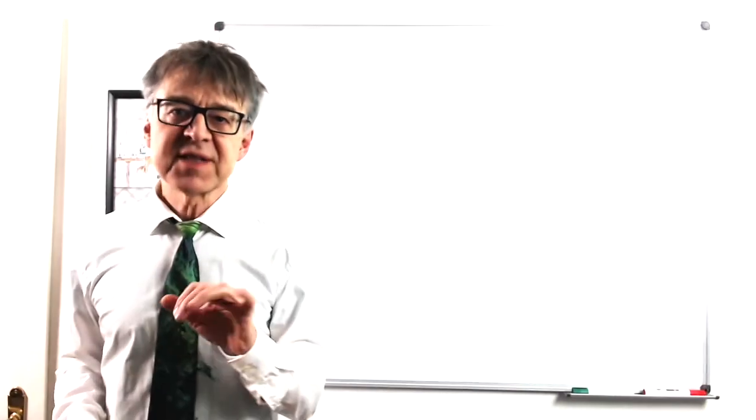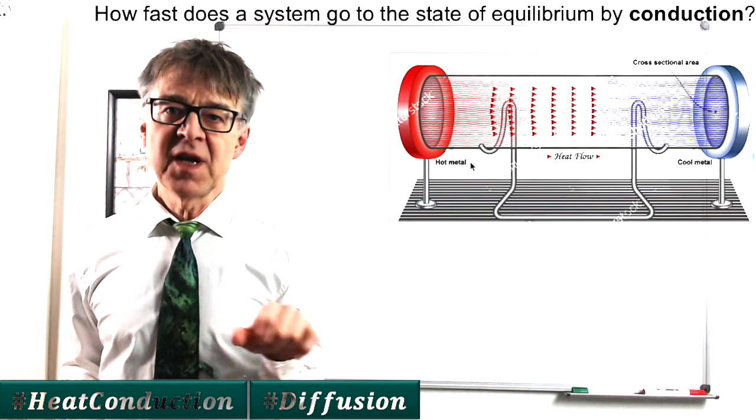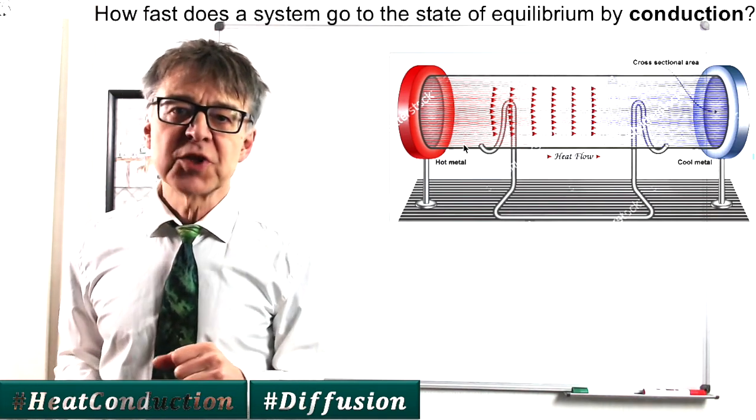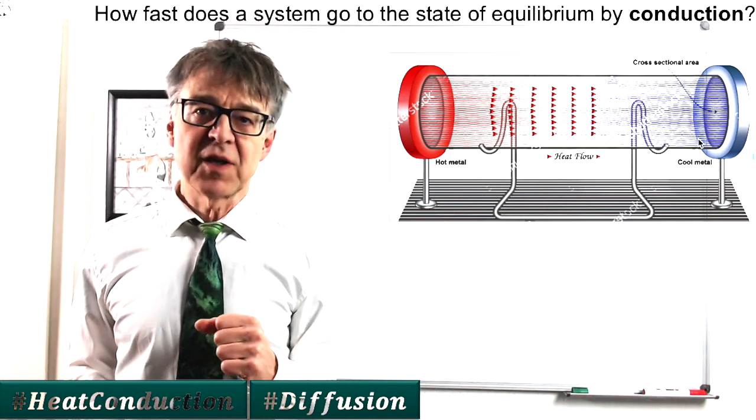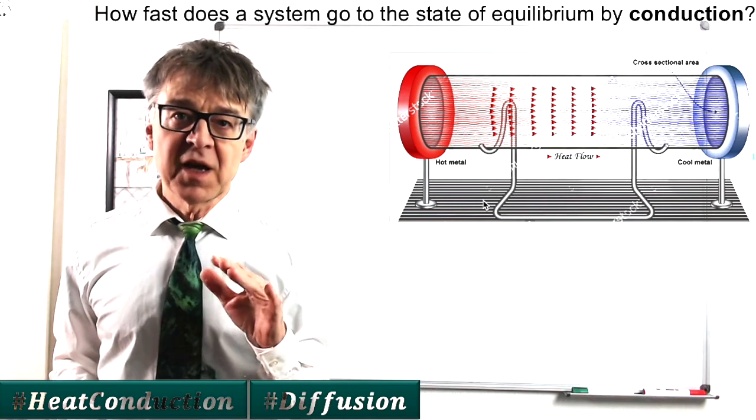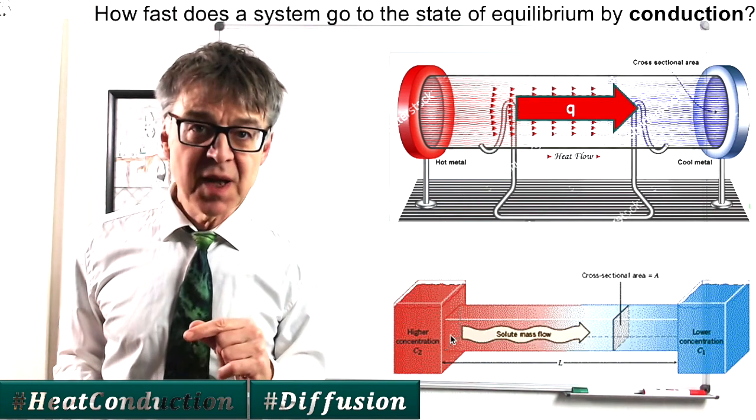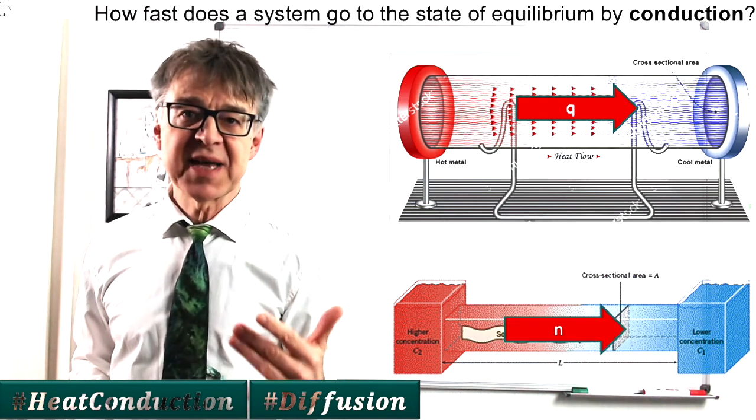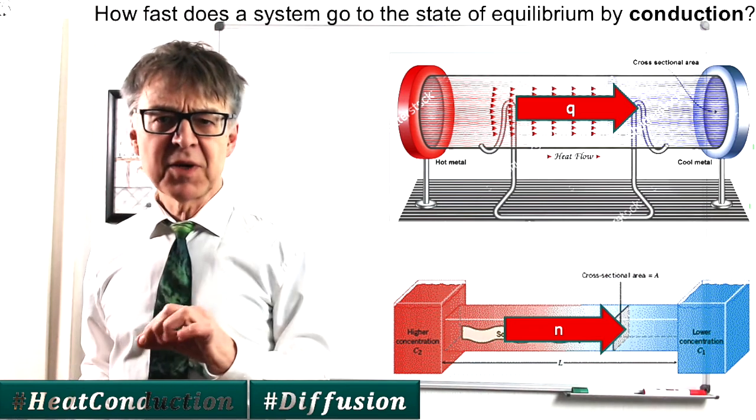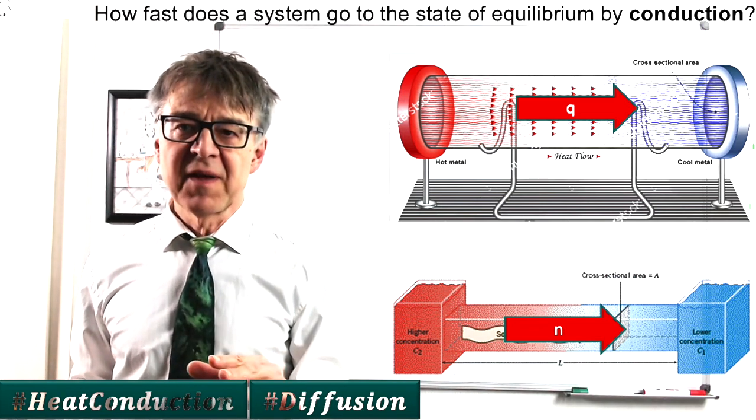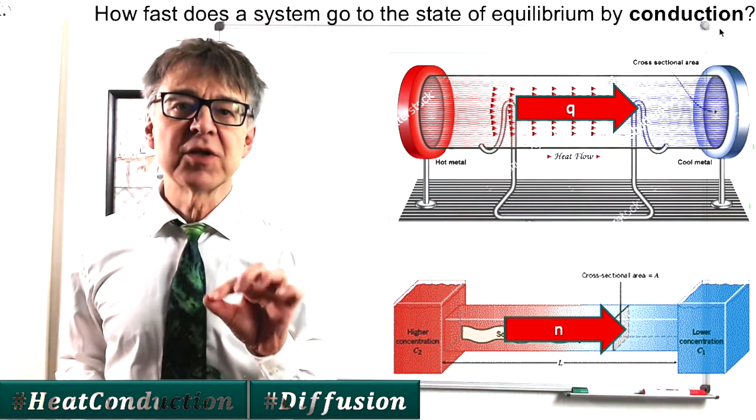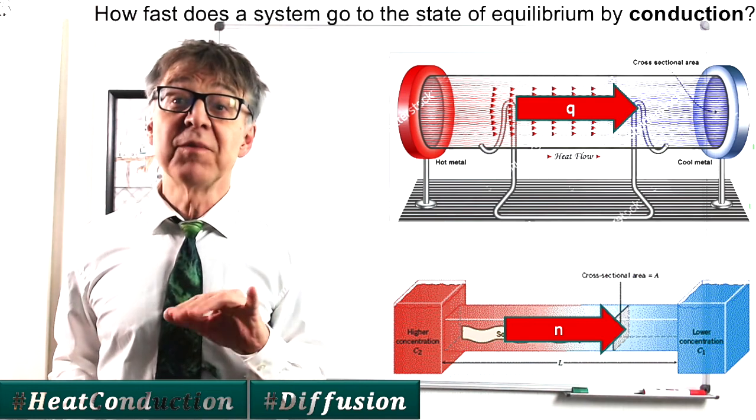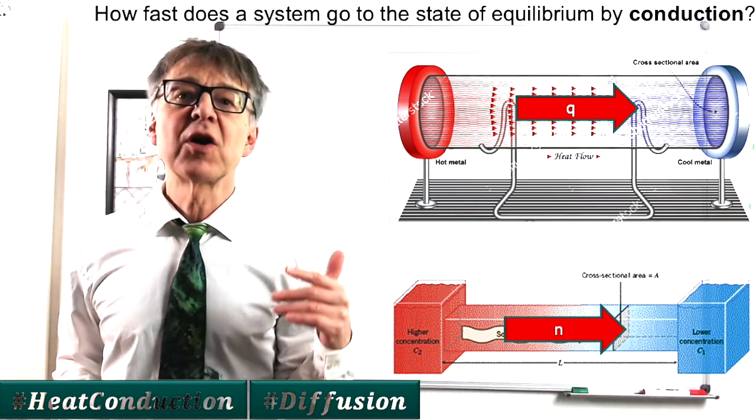If there are temperature differences in a system, heat transfer is provoked. Heat conduction occurs, which is a passive energy transfer without external flow. If there are different concentrations in a system, mass transport is provoked. Diffusion occurs, which is passive mass transfer. Both processes are passive. They are summarized under the term conduction. Active transport processes, on the other side, go along with the movements of fluids and are called convection.